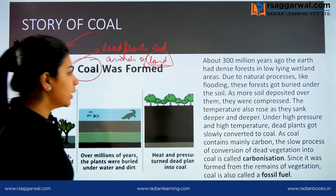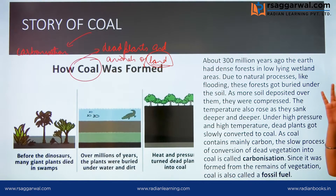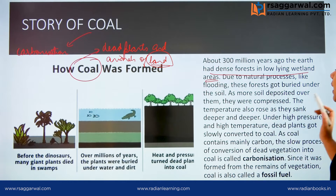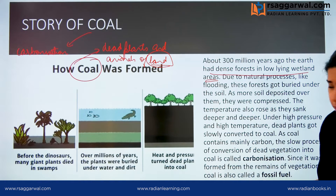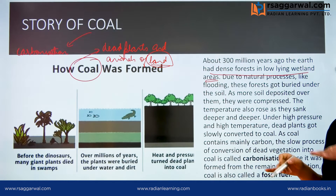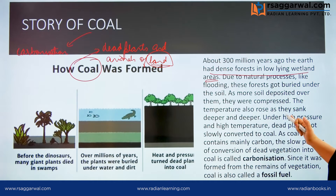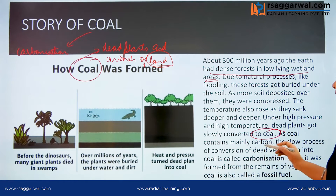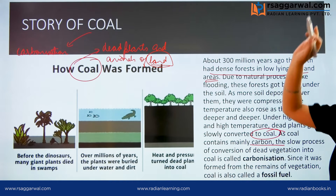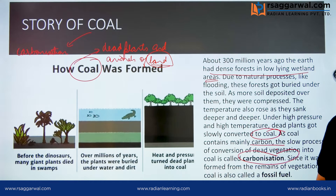About 300 million years ago, the earth had dense forests in low-lying wetland areas. Due to natural processes like flooding, these forests were buried within the soil under layers of deposits and compressed. As the material sank deeper and deeper, temperature rose. Under high pressure and high temperature, dead plants converted into coal — because coal is essentially carbon. This slow process over 300 million years is called carbonization, and since it is made from dead remains of plants and animals, we call such fuels fossil fuels.